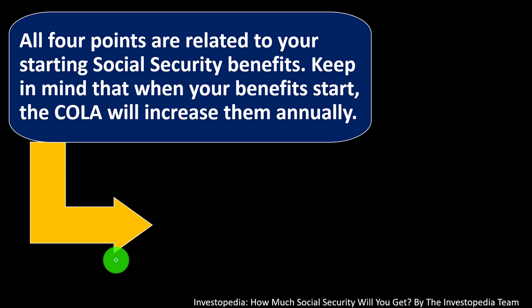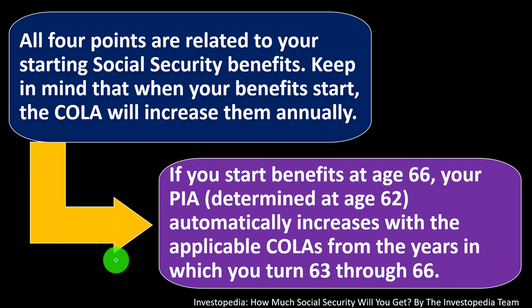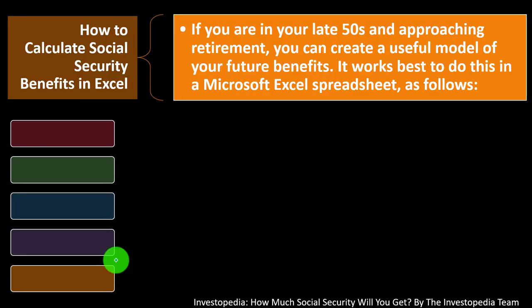Keep in mind that when your benefits start, the COLA — the inflation adjustment factor — will increase them annually to keep up with the purchasing power of the dollar. So if you start benefits at age 66, your PIA determined at age 62 automatically increases with the applicable COLAs from years in which you turn 63 through 66.